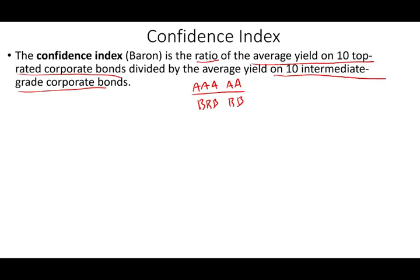You're trying to find the spread between them. For example, if the triple-A and A bonds are yielding 4% and the intermediate bonds are yielding 7%, dividing 4 by 7 gives approximately 0.57. To judge whether this is good or bad, you compare it to a prior period — if last period the ratio was 0.75, that context matters. The ratio will always be less than one because higher-rated bonds offer lower yields than intermediate bonds.